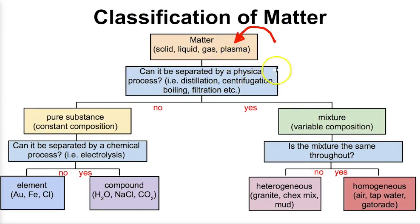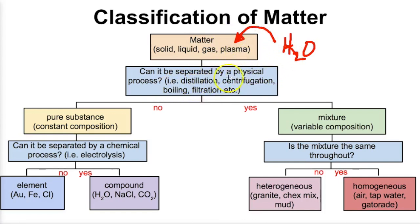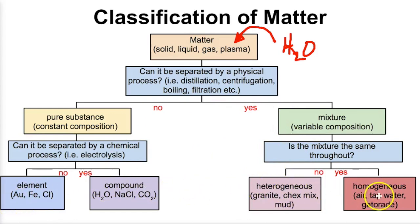I recommend you pause the video and plug in a bunch of different substances — whether it's water or the air we're breathing — and see how it works. For example, let's plug H2O into this schematic. Can it be separated by a physical process? Well, water is a compound, so no, it cannot be separated by a physical process — so it's going to be a pure substance. Can it be separated by a chemical process? Yes, it absolutely can. So it's going to be a compound. Remember, elements can't be separated that way, so they go to the element branch. This shows you how all matter can be classified — whether it's pure substances or mixtures, elements or compounds, or heterogeneous versus homogeneous mixtures.